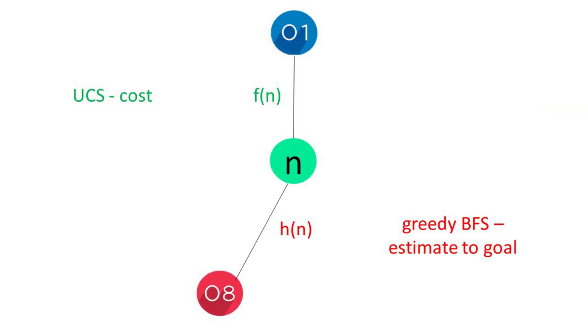First of all, you may have seen f(n) being used as the cost in uniform cost search in algorithms, whereas in the greedy best-first search, the estimate is written as a heuristic, which is h with n in brackets.